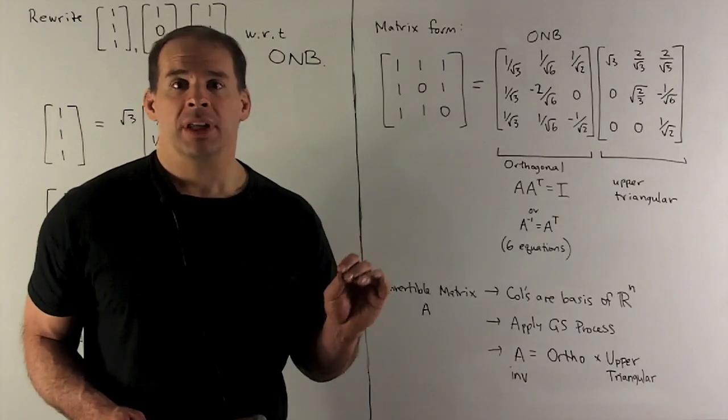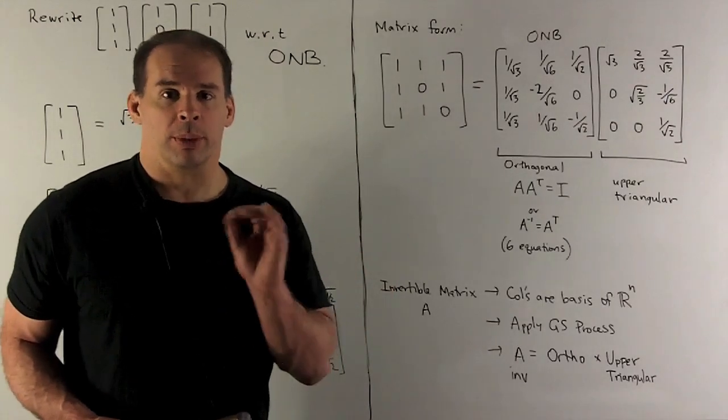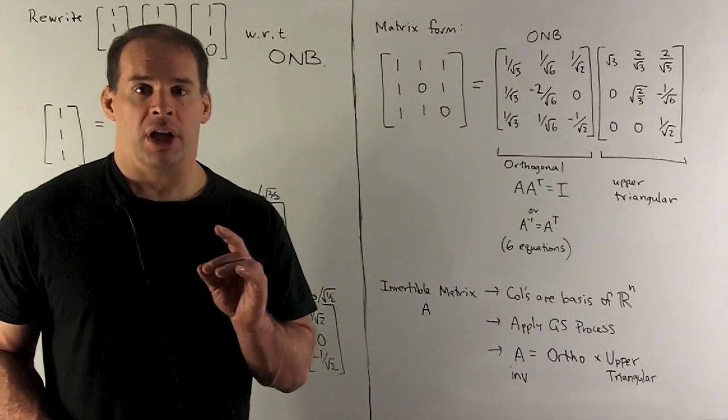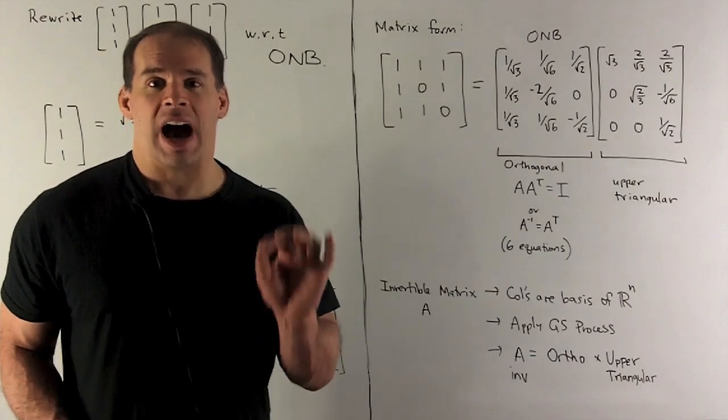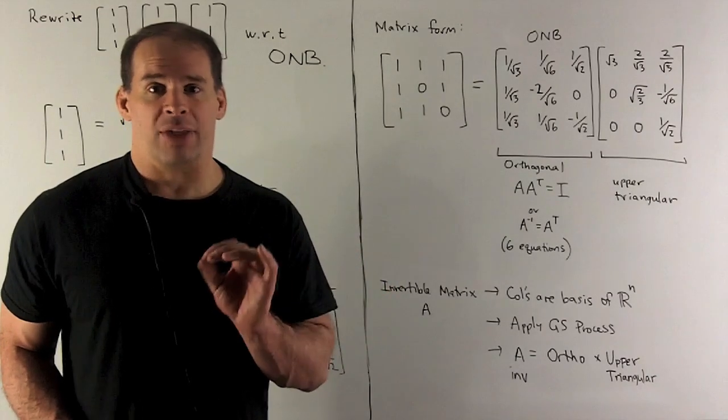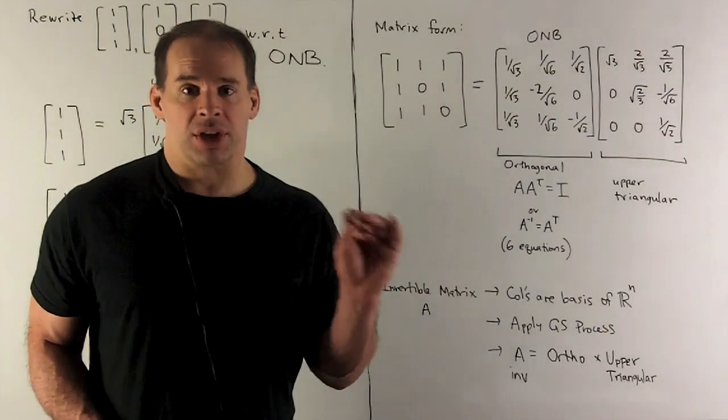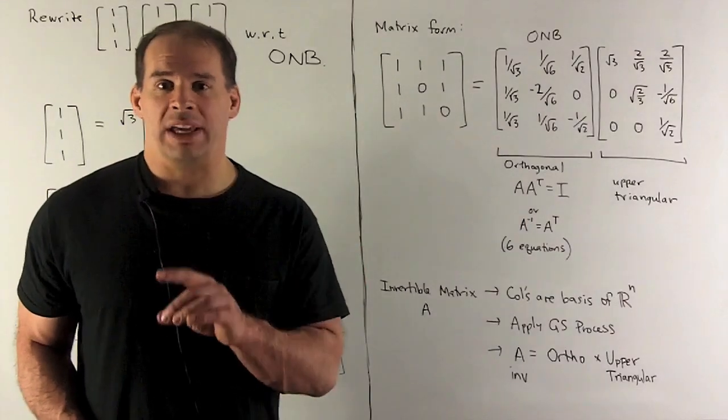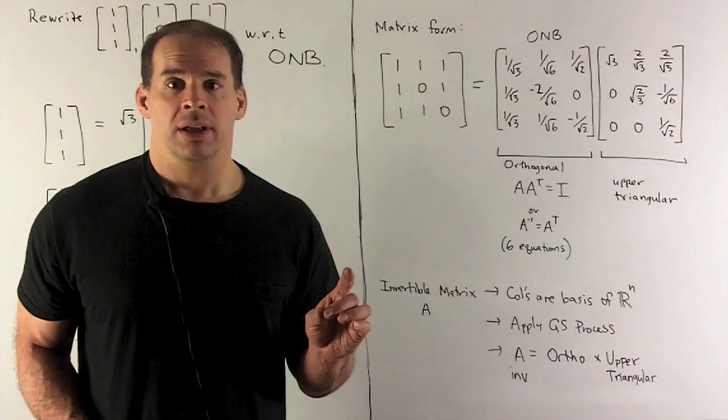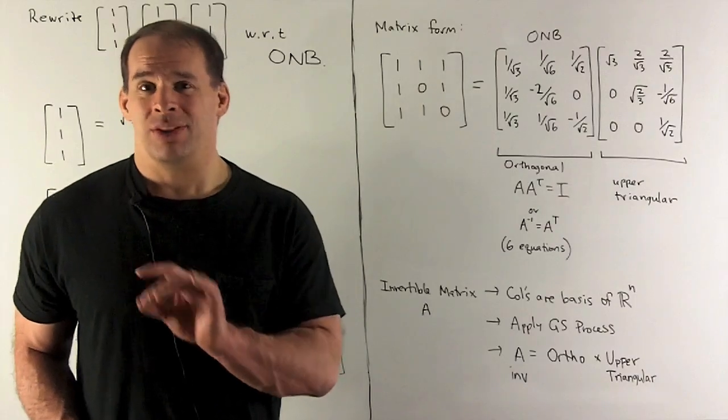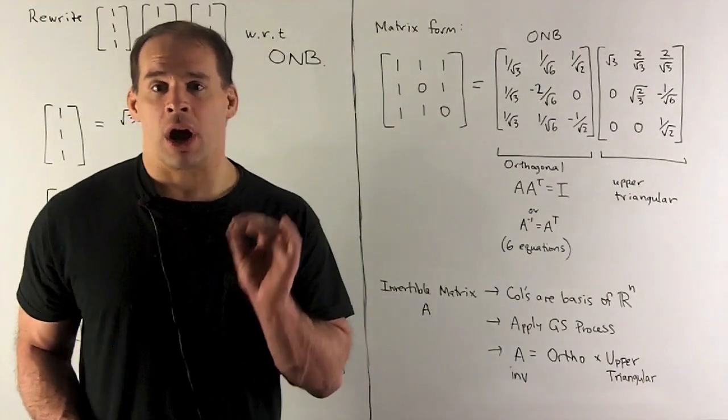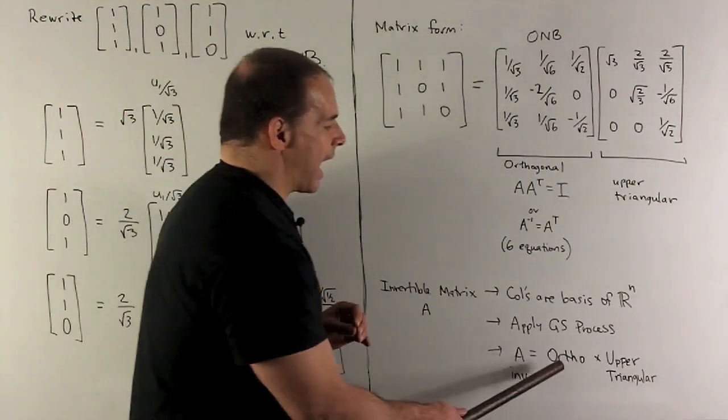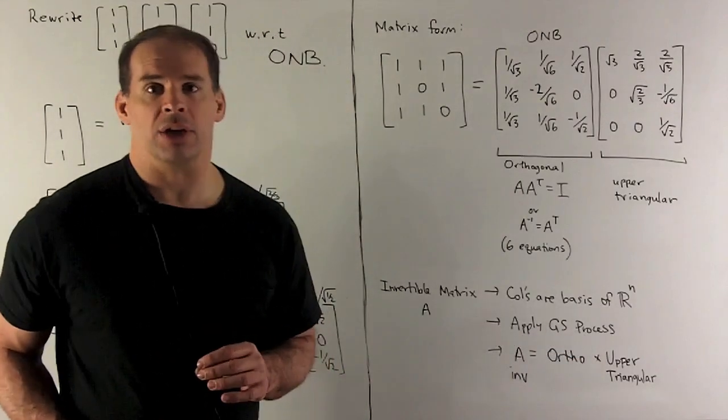Now, this is a completely general phenomenon. What happens? I start off with an invertible matrix A. It doesn't have to be 3 by 3. It could be n by n. I'm going to form a basis of Rⁿ by using the columns of that matrix. We apply the Gram-Schmidt process. An orthonormal basis comes out. That orthonormal basis is going to form an orthogonal matrix by loading in those vectors as columns. Then, if we take the relations from the Gram-Schmidt process, that's going to give us our upper triangular matrix. So we have this decomposition of invertible matrices as orthogonal matrices times upper triangular matrices.